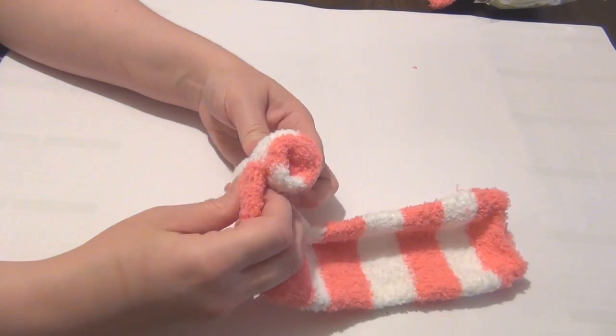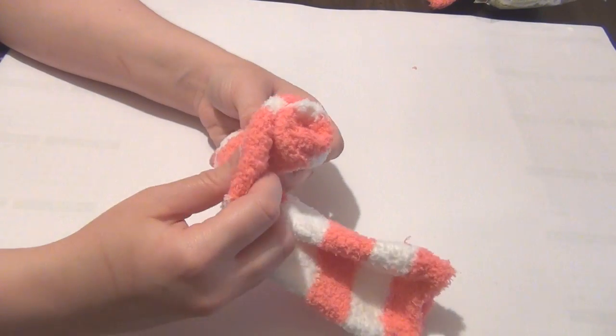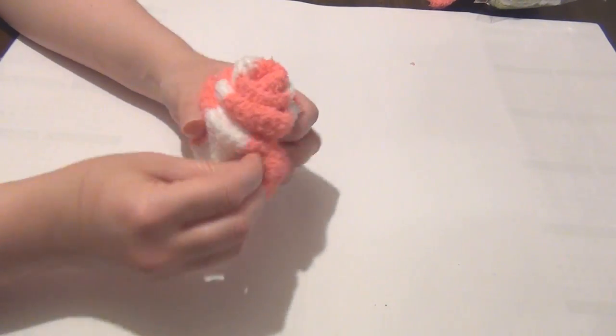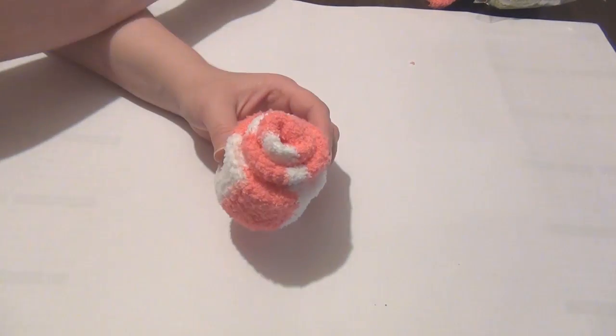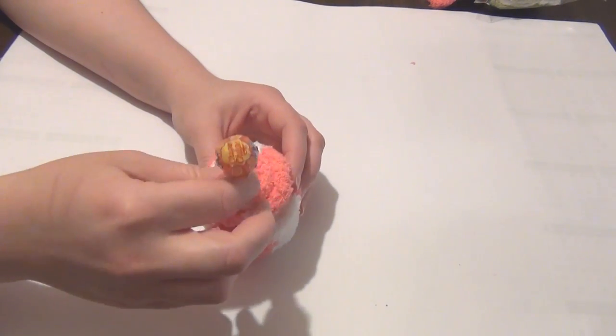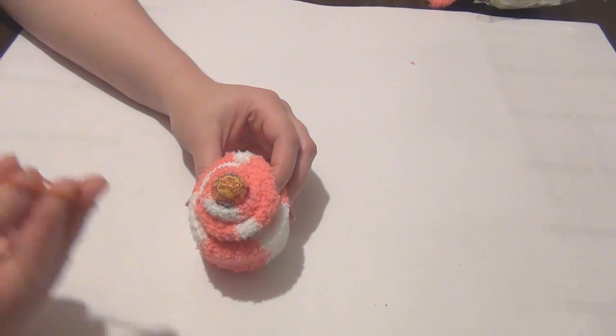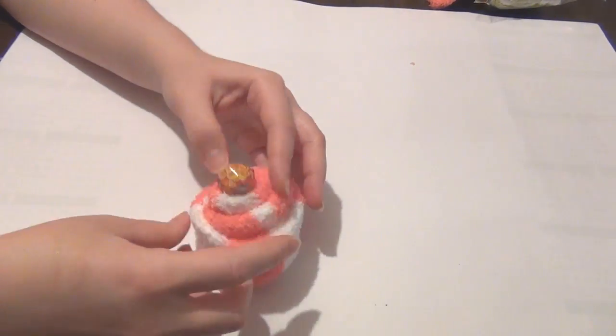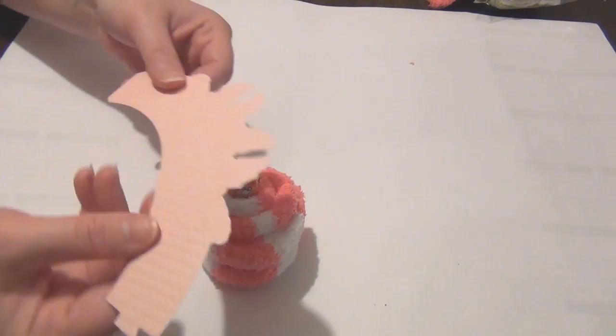And just make sure that the sides look neat. So just pick them up and just keep rolling that until you're happy with it. Then go ahead and take your lollipop and just push that into the center of the cupcake.